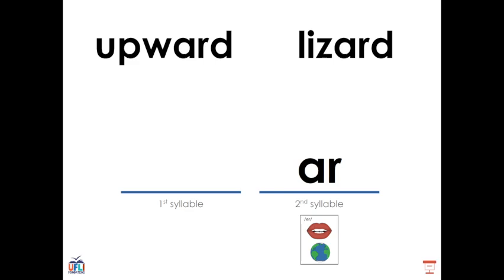Another example is the word lizard where we see the AR contained within that second syllable still saying er even though it's followed by the letter D.